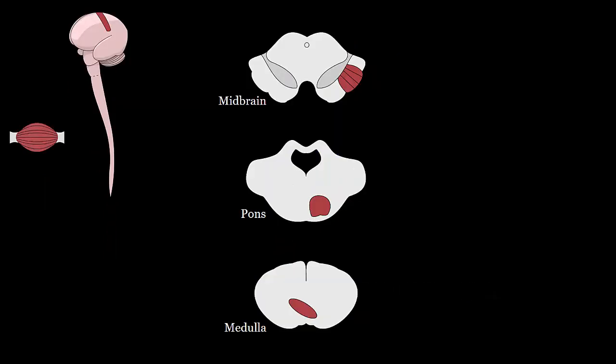Now we have left the cortex, past the posterior limb of the internal capsule, and are now in the brain stem. Recall that the brain stem is comprised of three parts. The midbrain, which is covered by the frontal lobe in this illustration on the left, the pons, and the medulla.